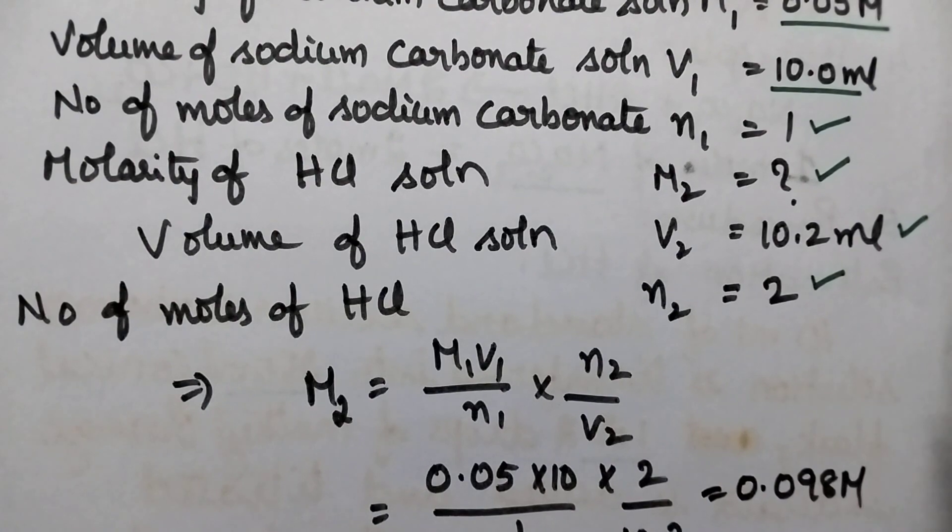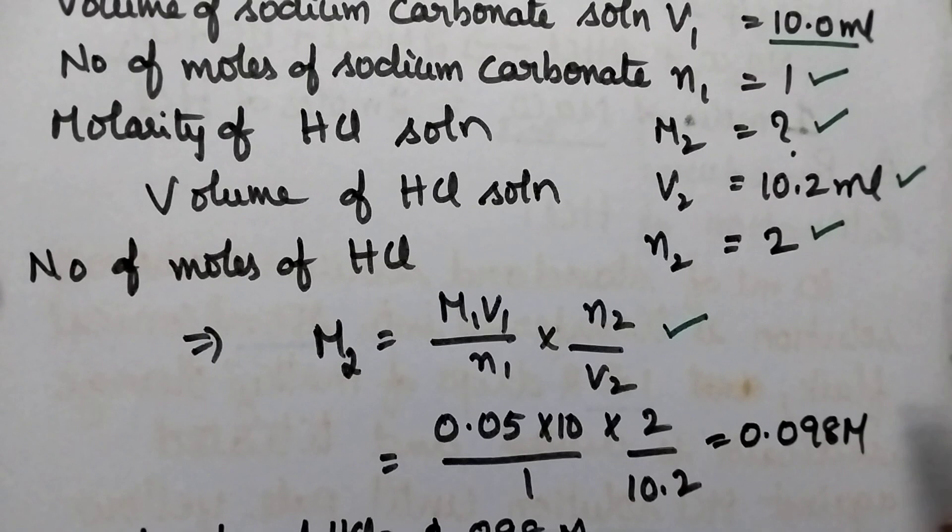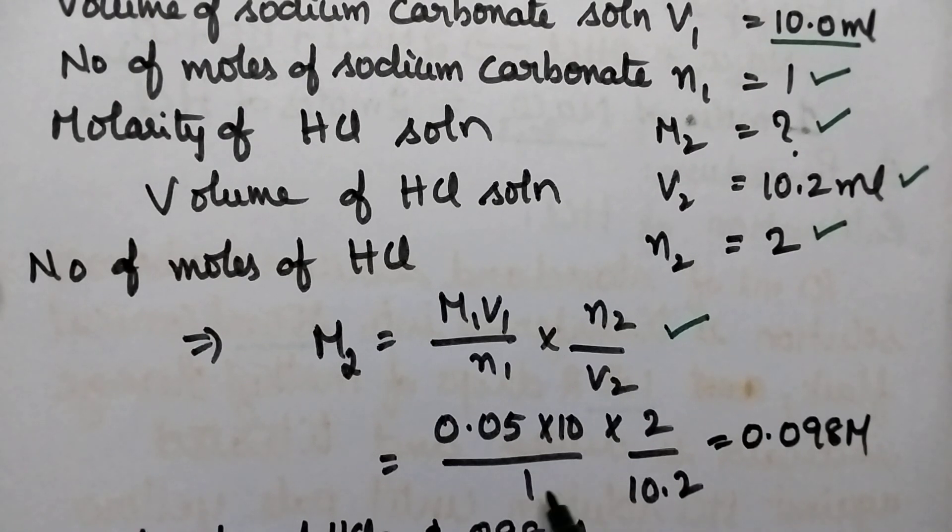Finally M2 can be determined by using the formula M1 V1 by N1 into N2 by V2 that is 0.05 into 10 by 1 into 2 by 10.2.